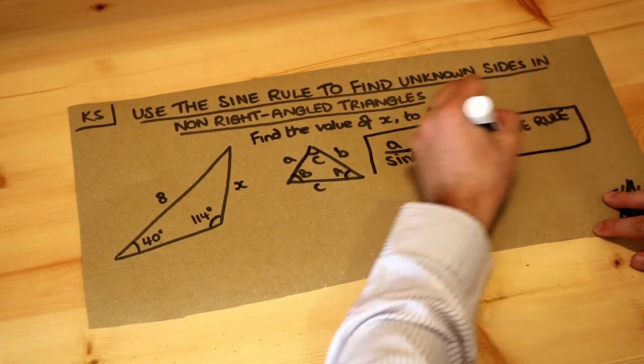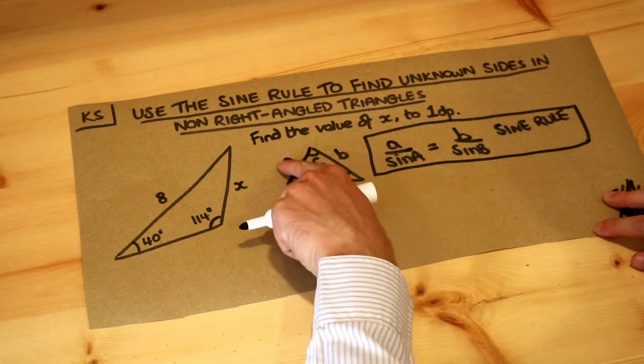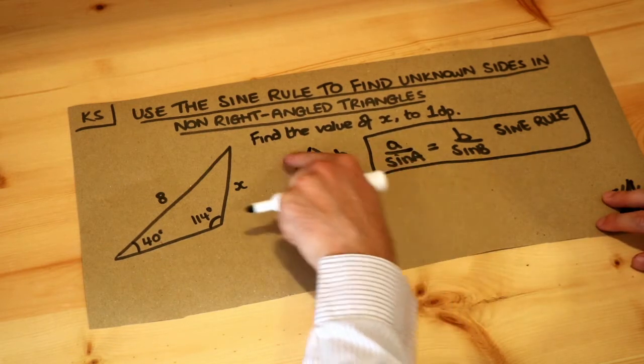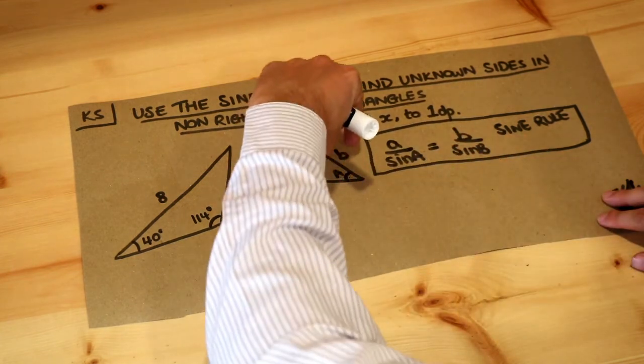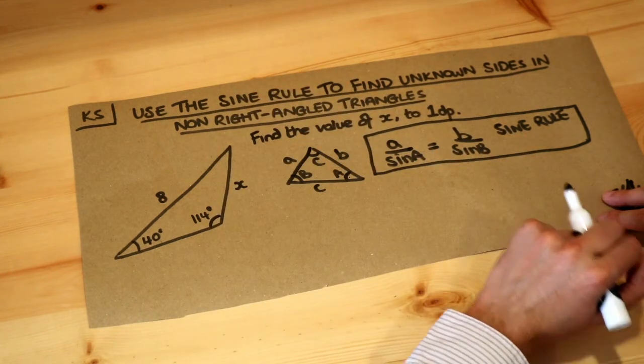What that's basically saying is that if we take any side of this triangle and divide it by the sine of the opposite angle, we always get the same result for any three of these pairs.